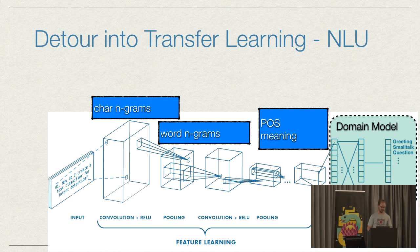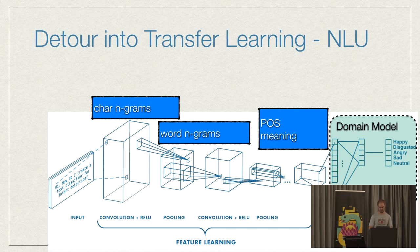For example, if you had a network that classifies text into greeting, small talk, question, some list of classes, you can reshape that front part, retrain, and within a few epochs - without spending a lot of training effort - you have a model that can do emotion detection using that same pretrained language model, but now with a reshaped head specific to your domain.